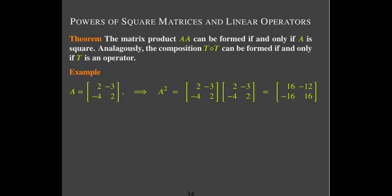Here's an example. If I take the 2 by 2 matrix with entries 2, negative 3, negative 4, 2 and square it, I have to use matrix-matrix multiplication. So I take the dot product of row (2, −3) with column (2, −4), that gives me 16; row (2, −3) with column (−3, 2) gives me negative 12, and so on.